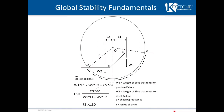Slices at the top of the slope tend to produce failure. Those at the bottom of the slope resist failure. Shearing resistance along the failure surface also resists failure. Multiple circles with varying centers and radii are checked by computer software to determine the critical failure circle with the lowest safety factor.